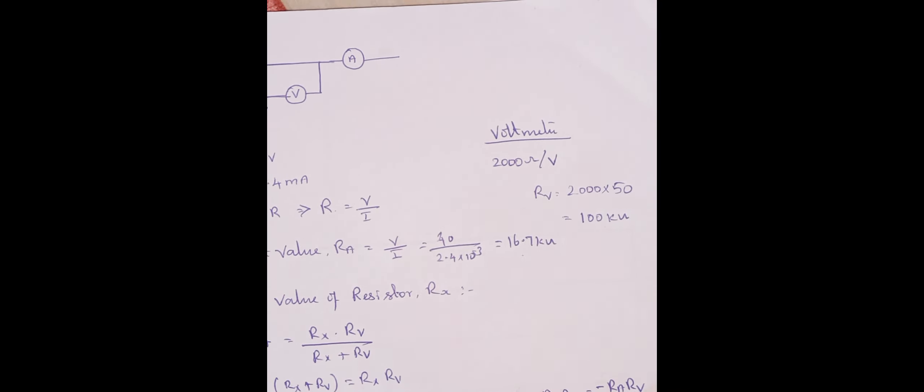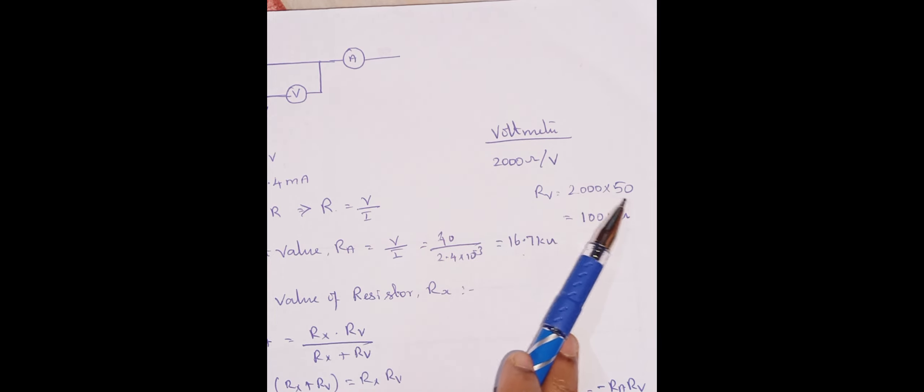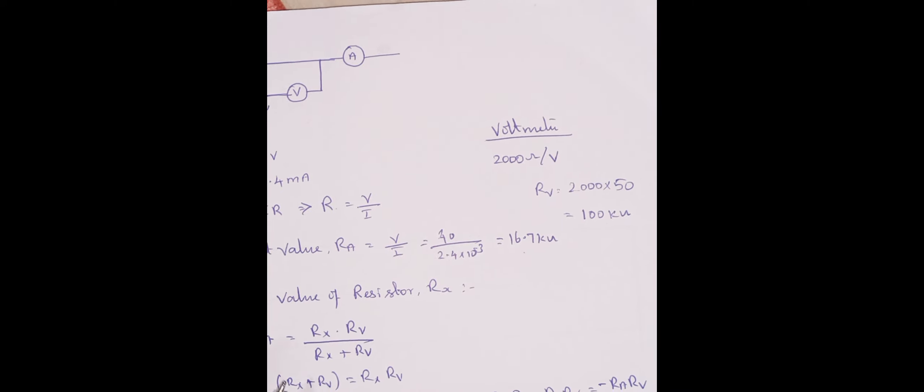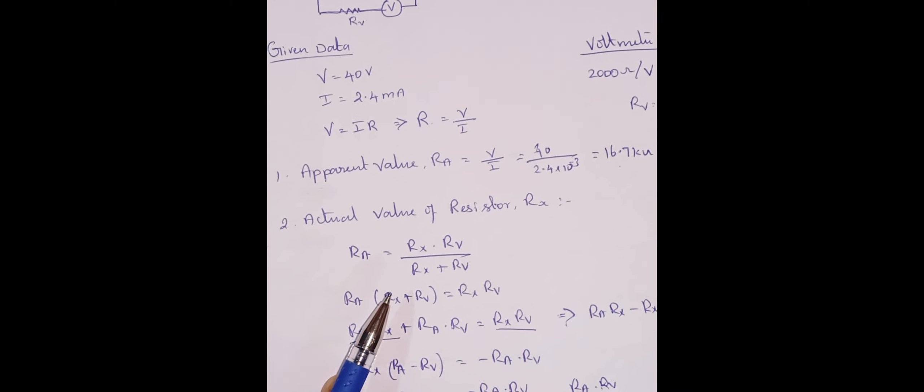So it is given in the problem as voltmeter is having 2000 ohm resistance per volt. So it is a 50 volt scale, so total internal resistance R is equal to 2000 into 50. So that I am getting 100 kilo-ohms. So apparent value is 16.7 only without considering this internal resistance of the voltmeter.